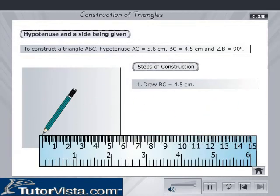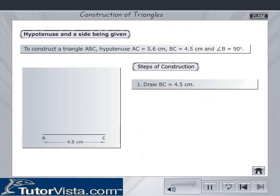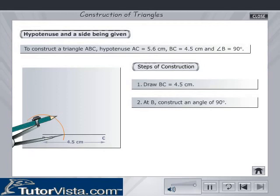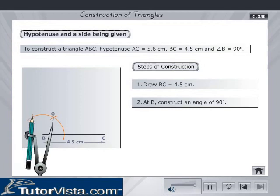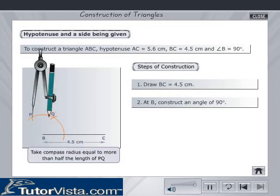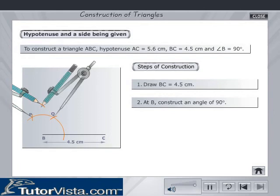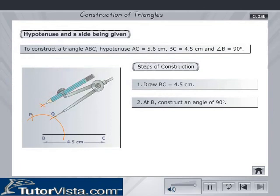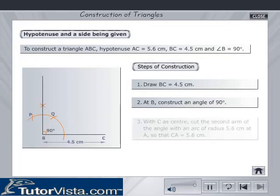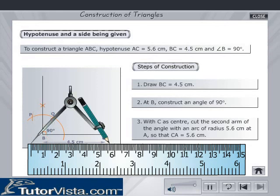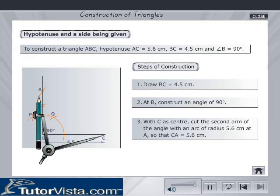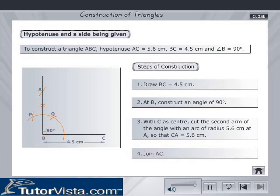Draw BC is equal to 4.5 cm. Construct an angle of 90 degrees at B. With C as center, cut the second arm of the angle with an arc of radius 5.6 cm at A, so that CA is equal to 5.6 cm. Join AC.